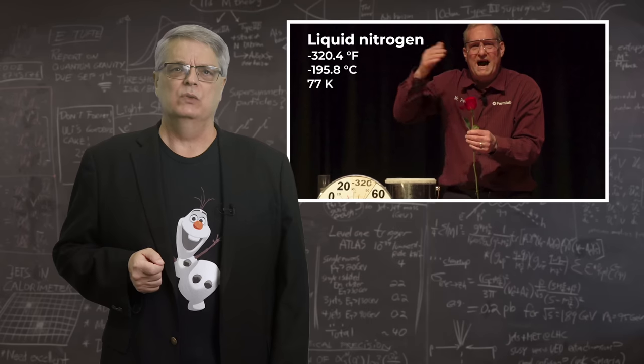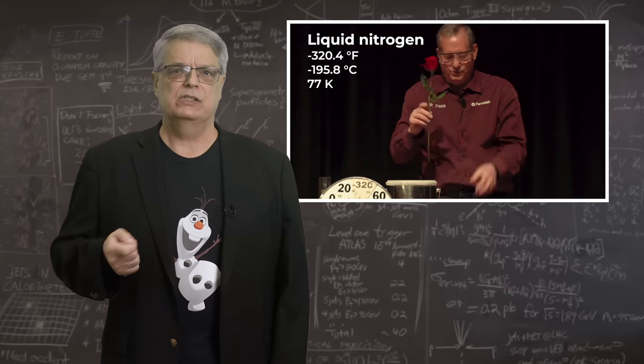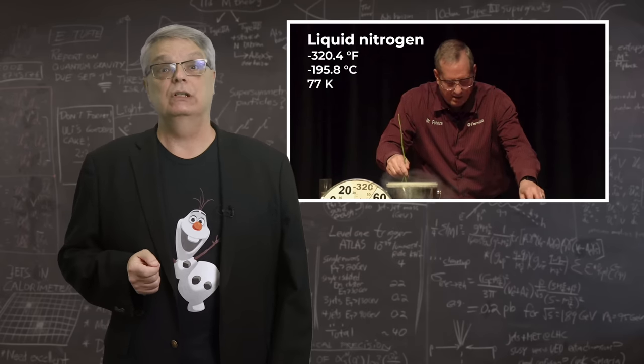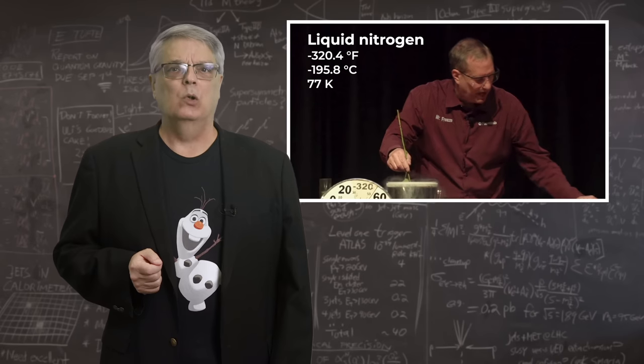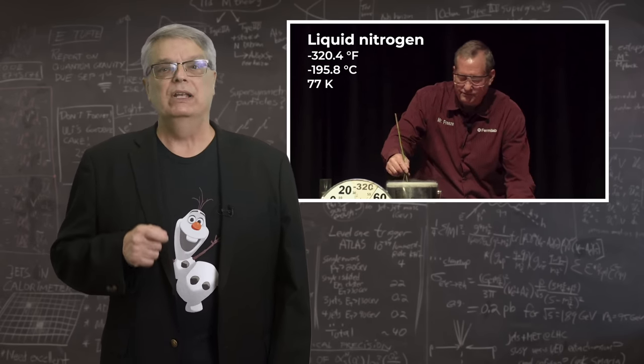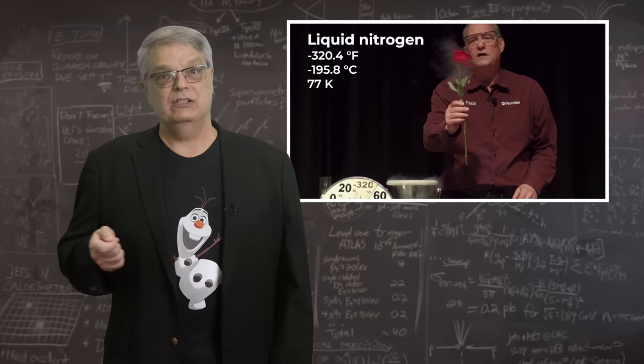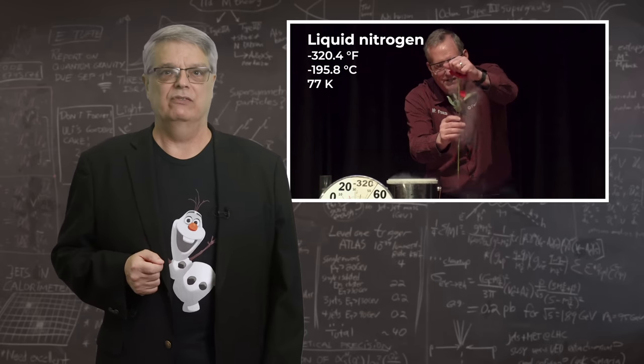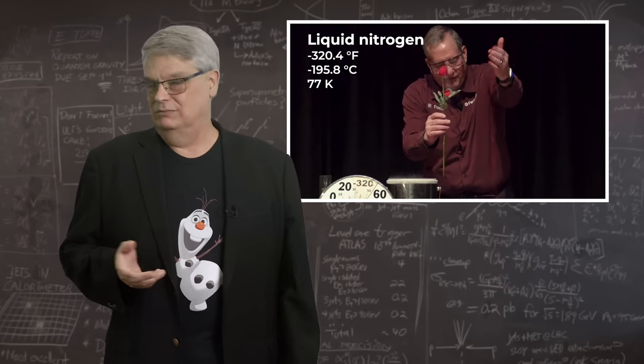What about liquid nitrogen, which is what you get when the dominant substance in ordinary air is chilled until it's liquid? That's colder, coming in at minus 320.4 degrees Fahrenheit, minus 195.8 degrees Celsius and 77 Kelvin. That's better, but we're not there yet.